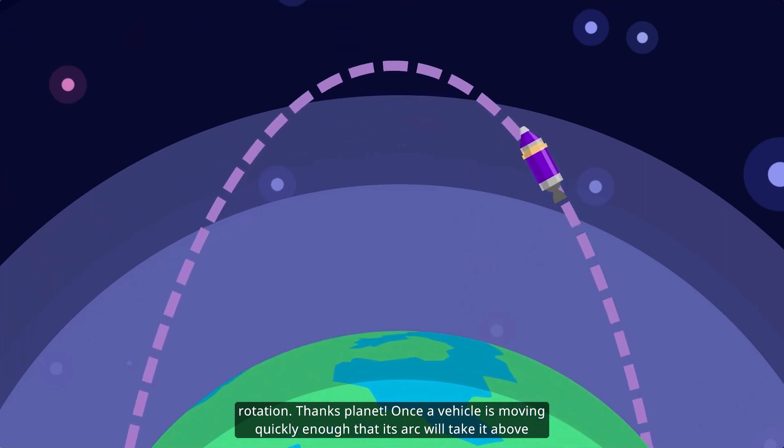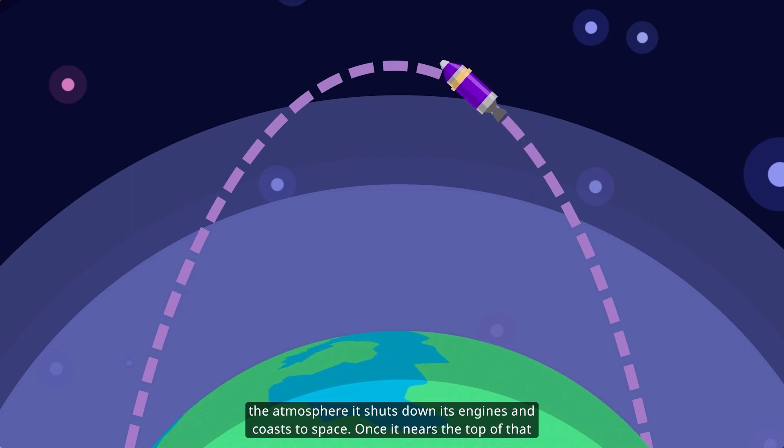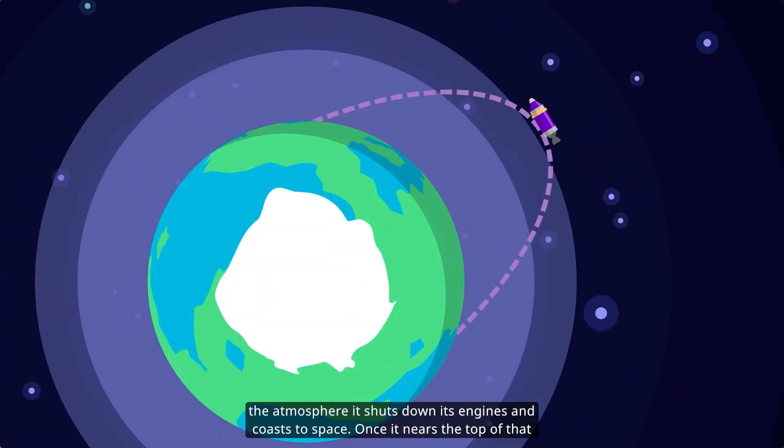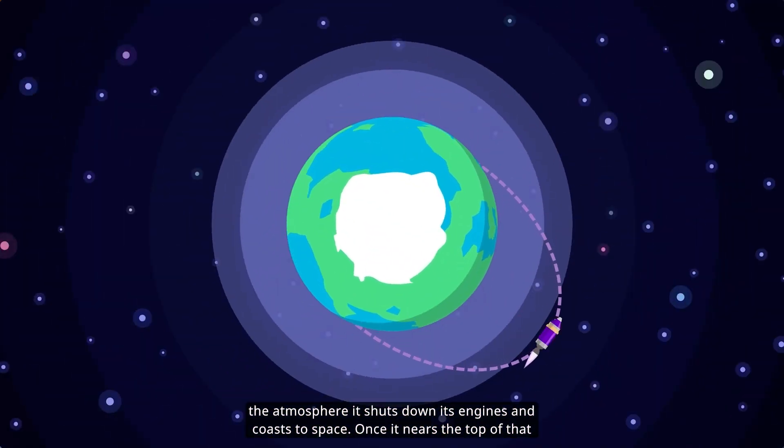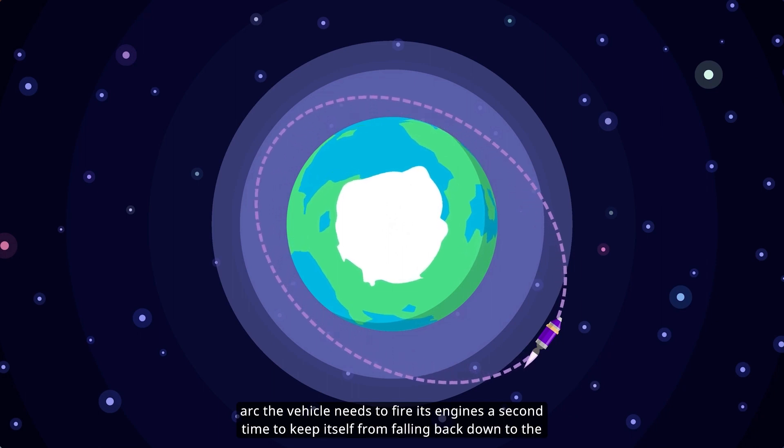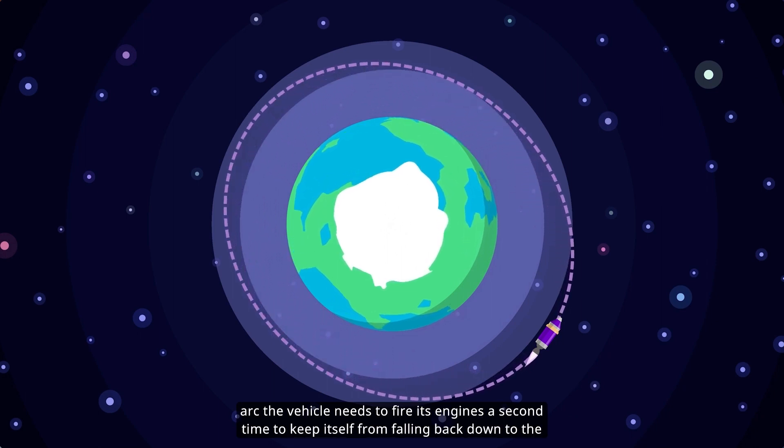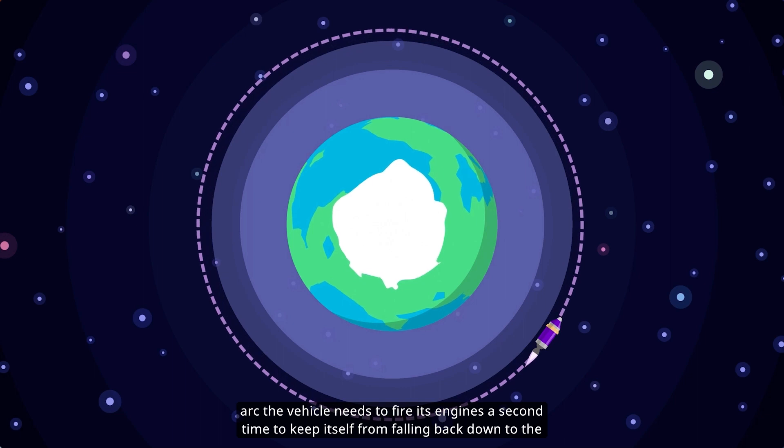Once a vehicle is moving quickly enough that its arc will take it above the atmosphere, it shuts down its engines and coasts to space. Once it nears the top of that arc, the vehicle needs to fire its engines a second time to keep itself from falling back down to the planet.